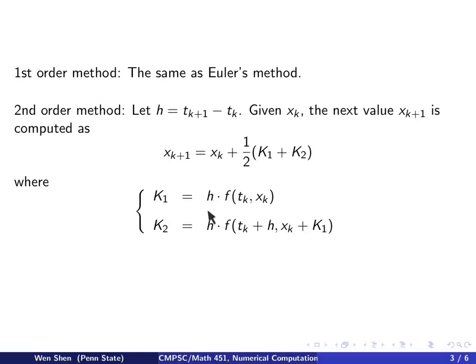K1 is simply h times f evaluated at tk and xk, so then this would be the same term in Euler's method to be added on xk to approximate for xk plus 1.